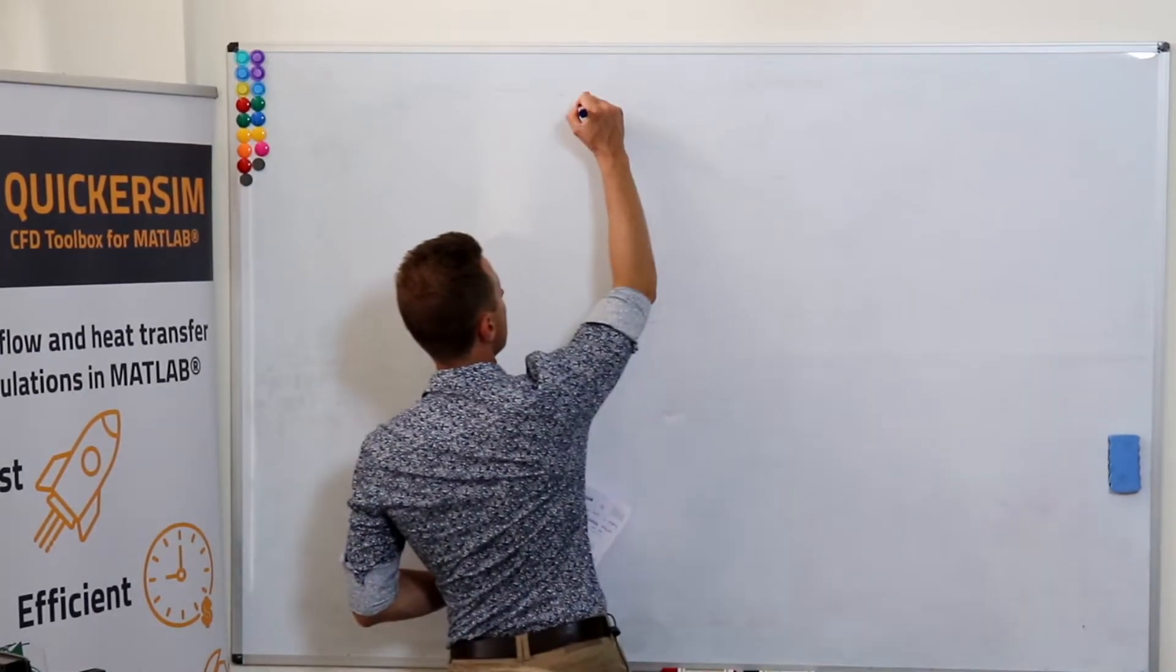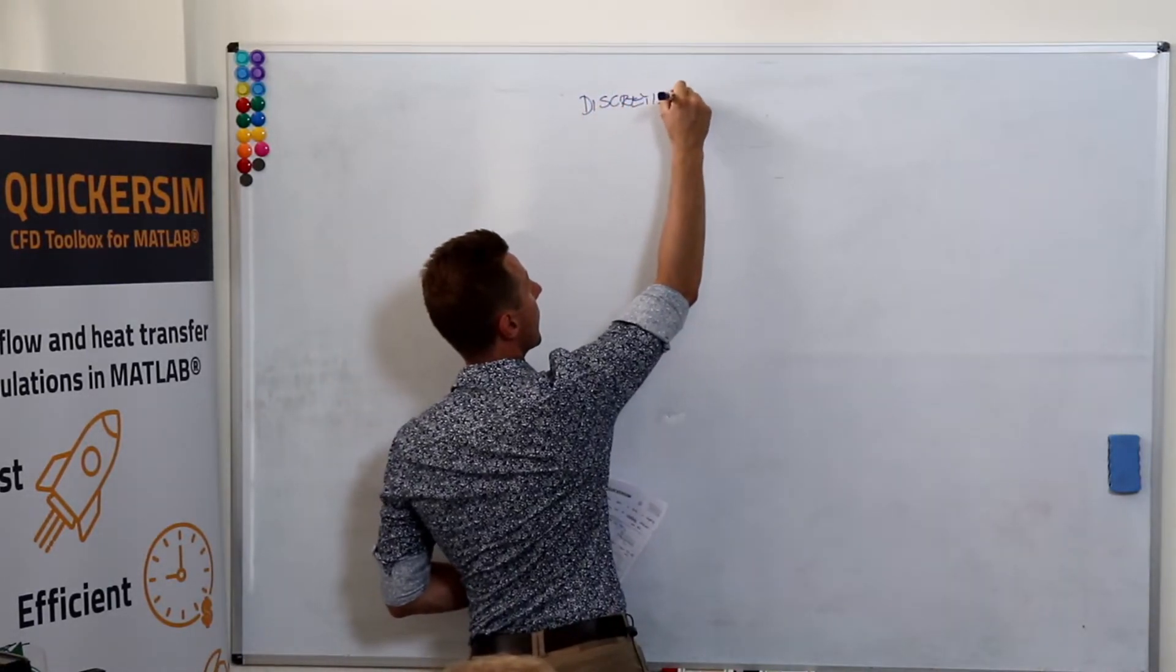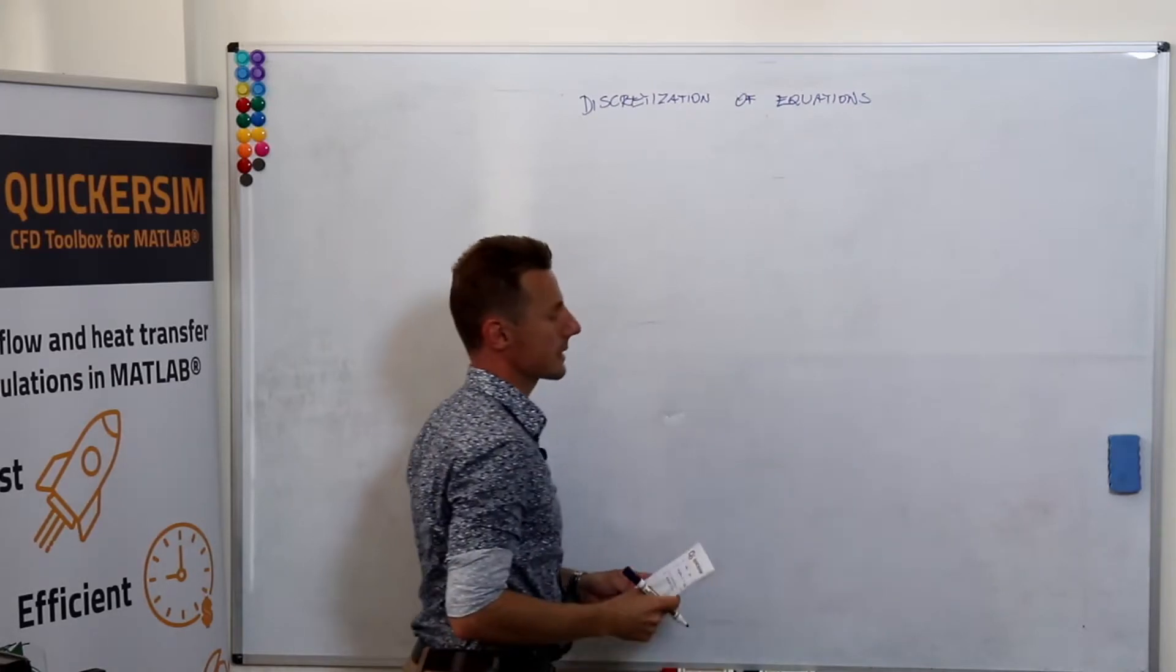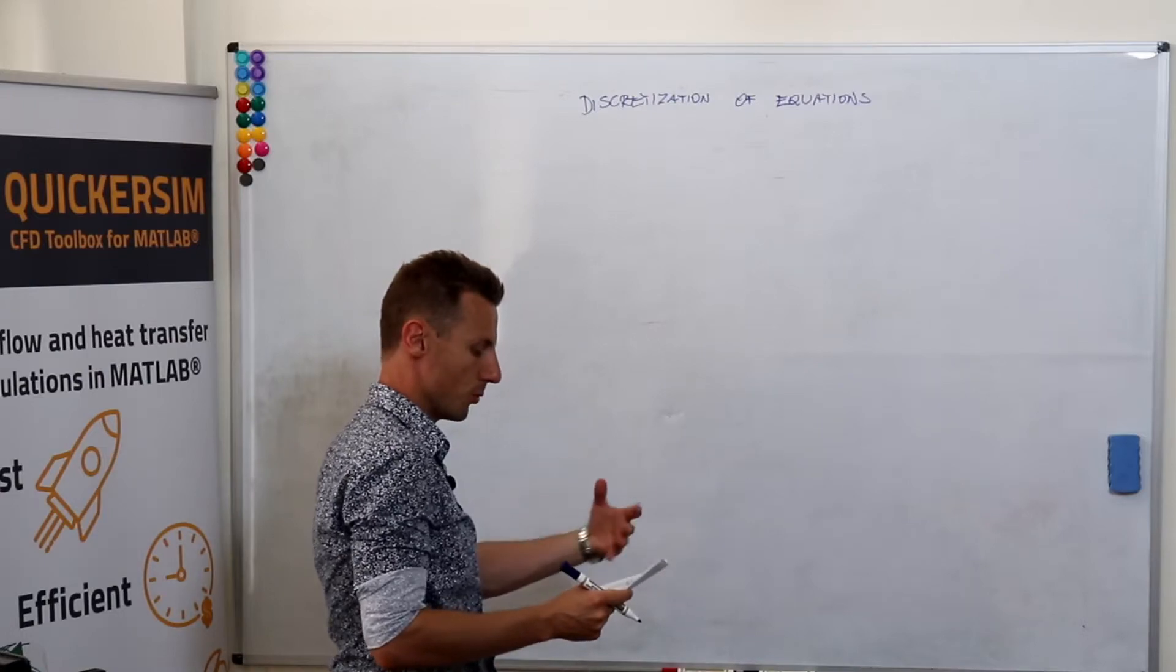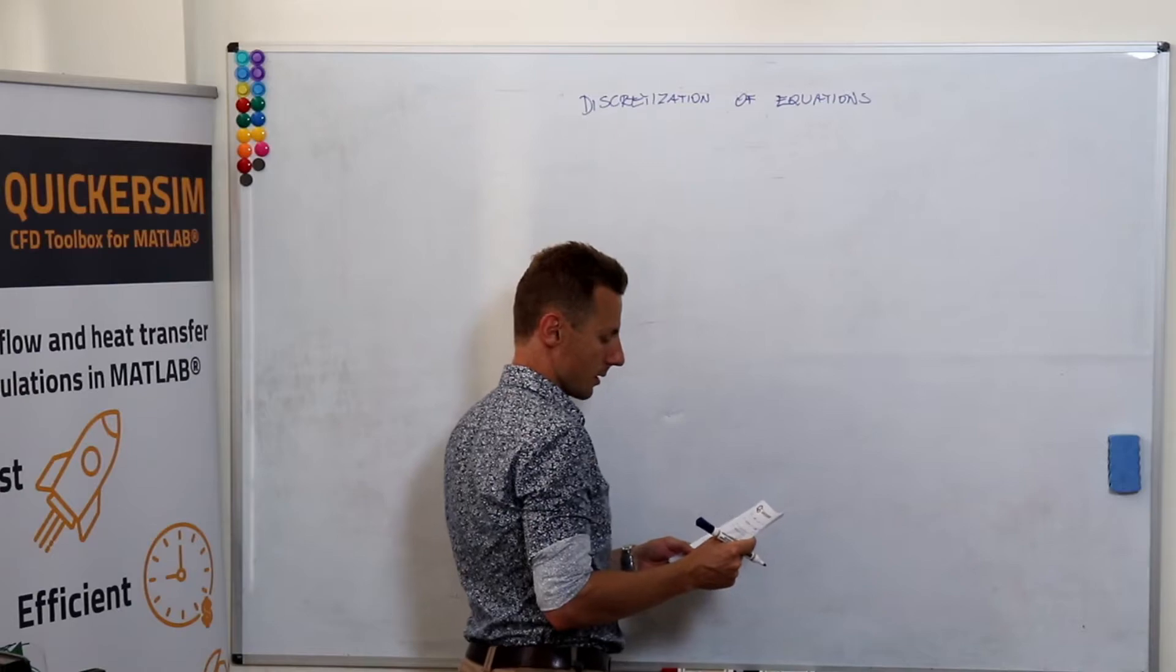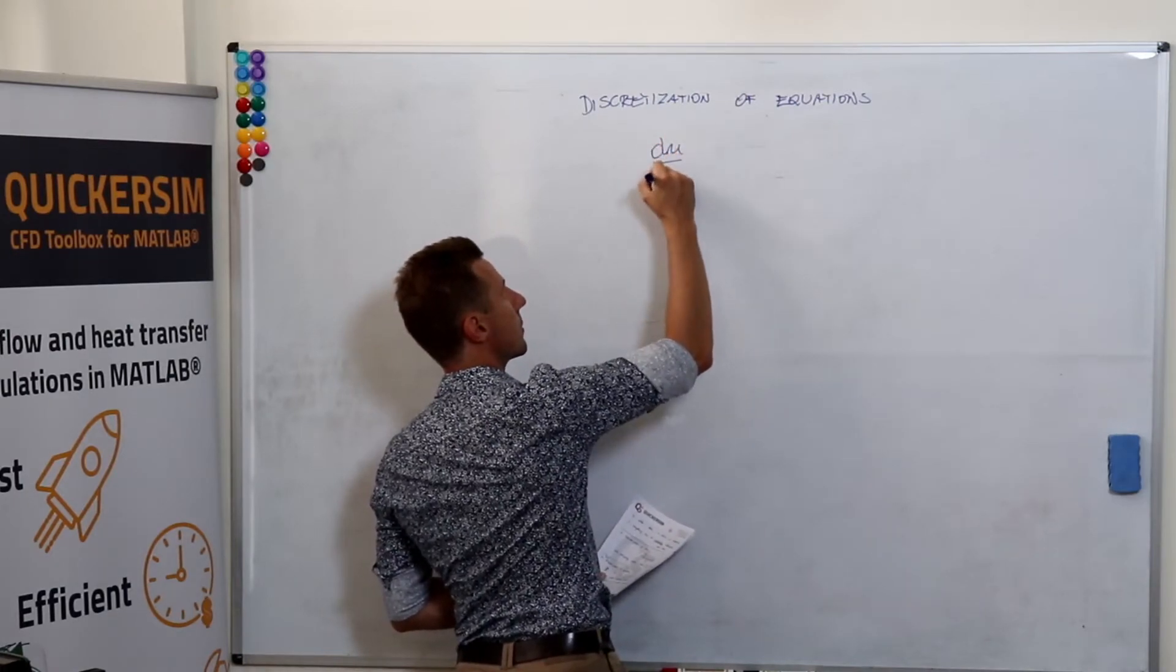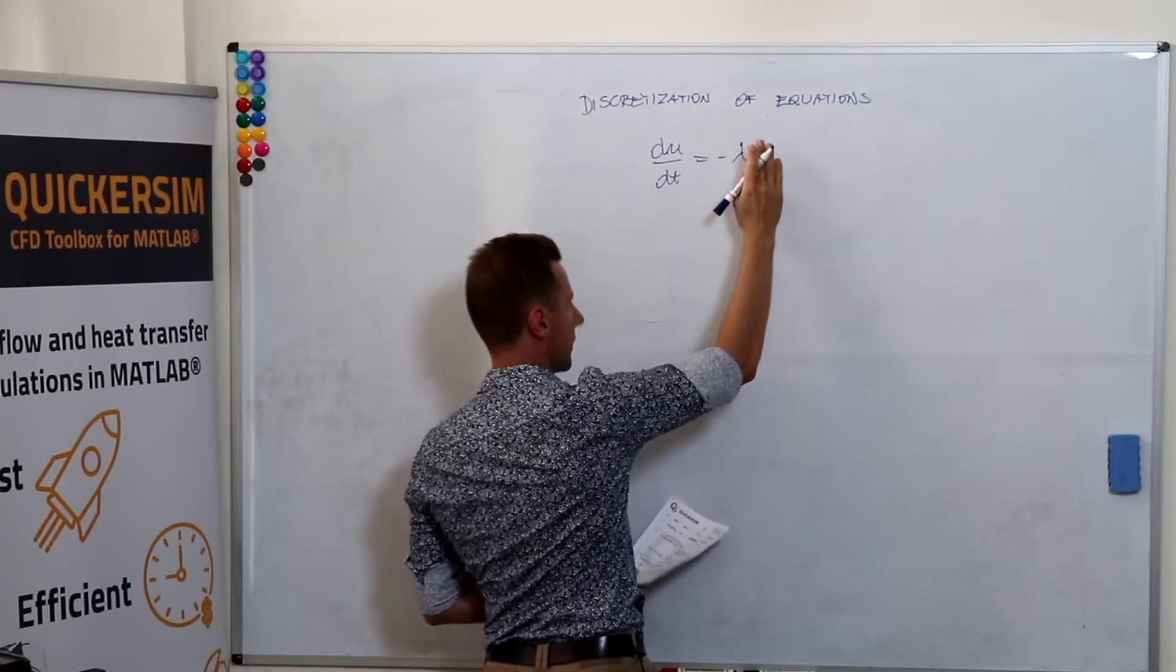Discretization of equations is the second step that we need to do when moving from a physical mathematical problem to the discrete algorithm. And let's assume we've got a very simple ODE, the one that I have already mentioned.